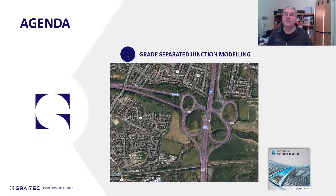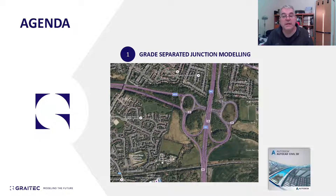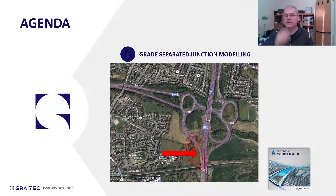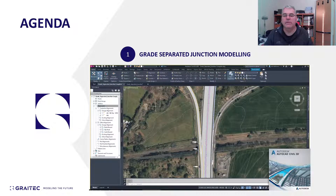The agenda for this video is very simple: grade-separated junctions and nothing else. What you're looking at here is junction 26 on the M6 — a major and quite beautiful intersection between the M6 and the M58 motorways. We're going to do the slip road and the northbound exit for junction 26. Here it is in Civil 3D with a corridor — this is what we're going to achieve in the video.